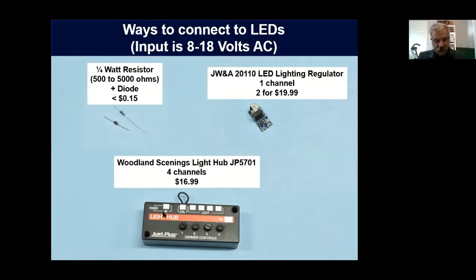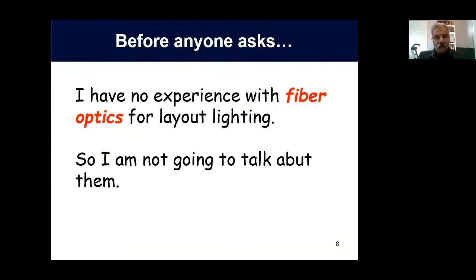If you want to vary the intensity of multiple LEDs in a simple structure, I use the Woodland Scenics Light Hub. Yes, it can be a bit pricey, but it really makes life much easier. This is the Light Hub — it takes AC or DC in, and there are four light outputs whose intensity is controlled by these dimmer controls. What I like about these is the intensity is very easy to set. You can turn the knob a little, and if you go too far you can back off and return to the previous intensity — there's no slop in the system.